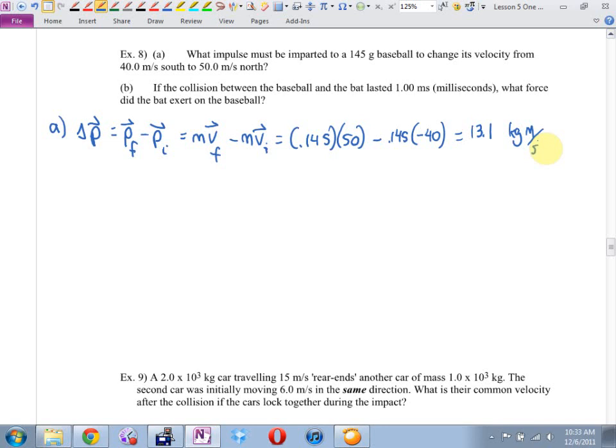I would also accept a negative there if you would let this be a negative and this be positive. That's fine. And the negative would simply be telling you it's in the opposite direction that the ball was traveling at the beginning. B. If the collision between the baseball and the bat lasted one millisecond, what force did the bat exert on the baseball? What do they want me to find here? Force. What did I just find here?